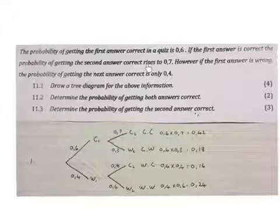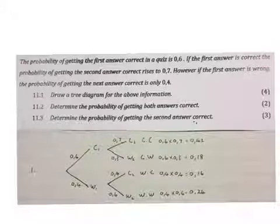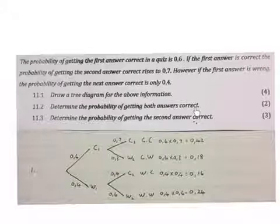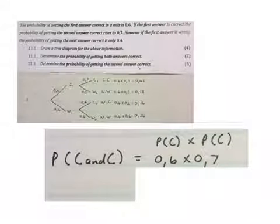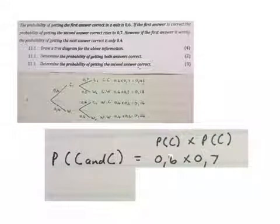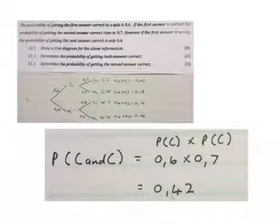Now I have all the information in the tree diagram. The next question asks: determine the probability of getting both answers correct. That is the correct-correct outcome. One way of writing it: P(correct and correct) = P(first correct) × P(second correct) = 0,6 × 0,7. The probability of getting both answers correct is 0,42.